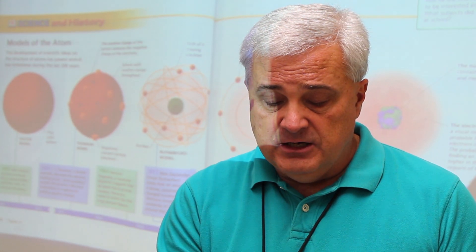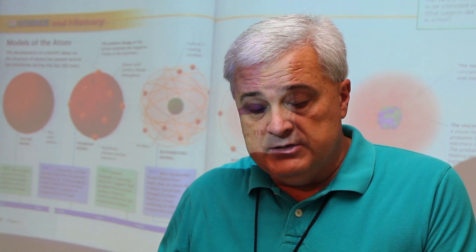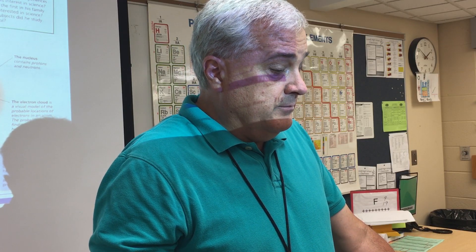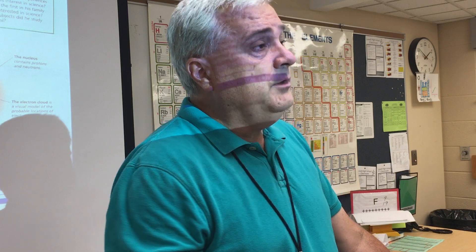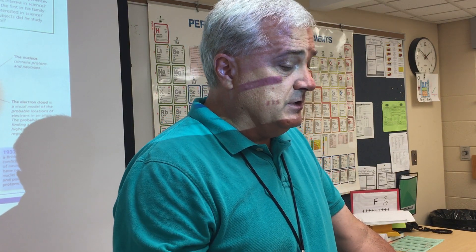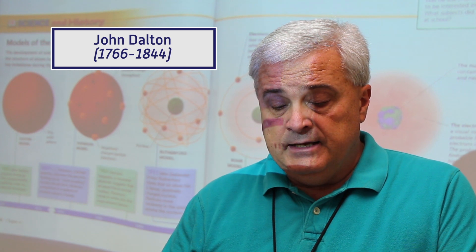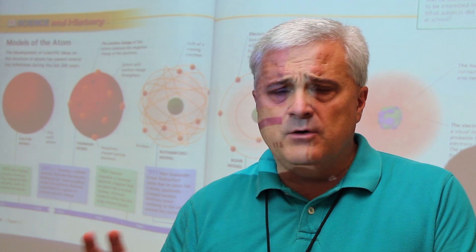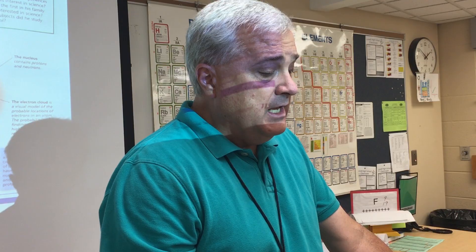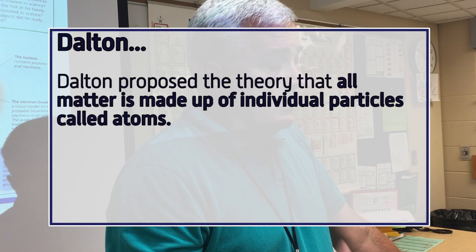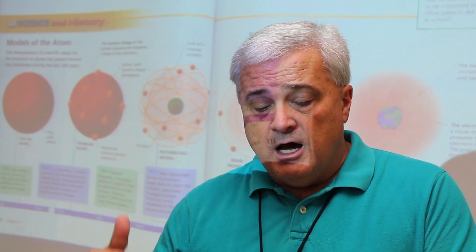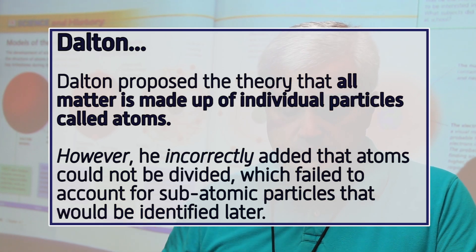By the 1800s, scientists had enough data from experiments to support more substantial atomic models. An early scientist who had thoughts about this was Dalton. Dalton got a lot of things right — he missed out on one point, but let's give him credit for what he got right first. He said that all elements are composed of atoms, agreeing with Democritus in that way.